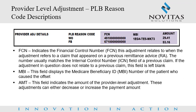Provider level adjustment PLB reason code descriptions. The following fields may also appear in the Provider Adjustment Details section of the remittance advice. FCN indicates the financial control number that this adjustment relates to when the adjustment refers to a claim that appeared on a previous remittance advice; this usually matches the internal control number field of a previous claim. If the adjustment does not relate to a previous claim, this field is left blank. MBI displays the Medicare beneficiary identifier number of the patient who causes the offset. AMT indicates the amount of the provider level adjustment; these adjustments can either decrease or increase the payment amount.